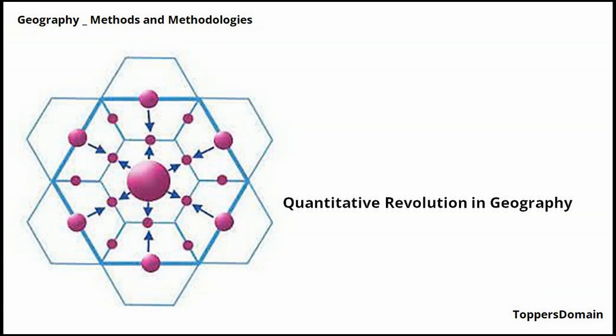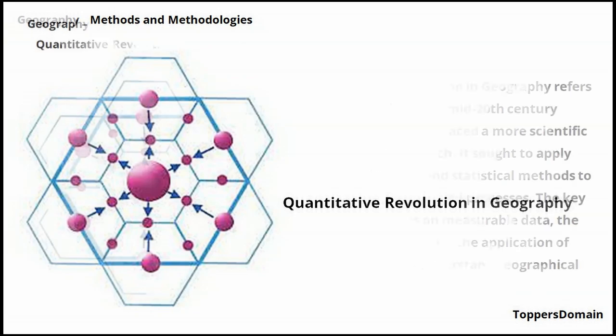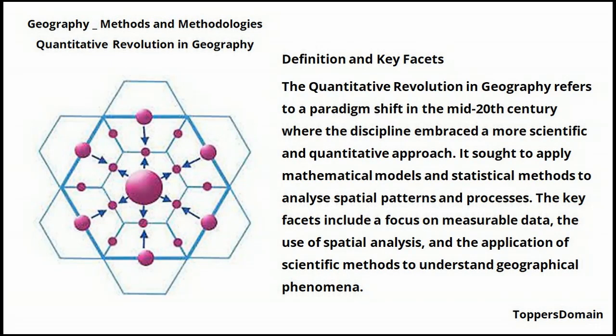The quantitative revolution in geography refers to a paradigm shift in the mid-20th century where the discipline embraced a more scientific and quantitative approach. It sought to apply mathematical models and statistical methods to analyze spatial patterns and processes.